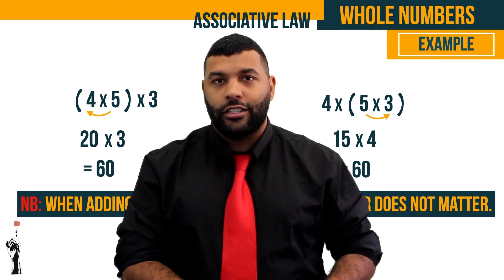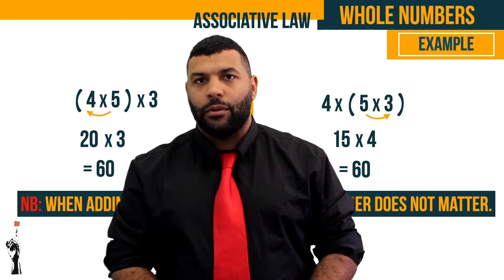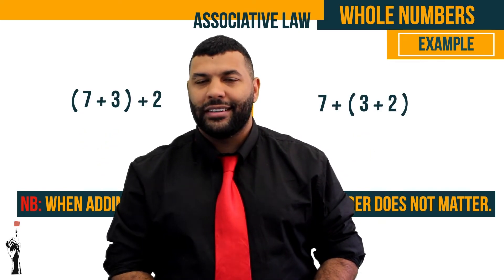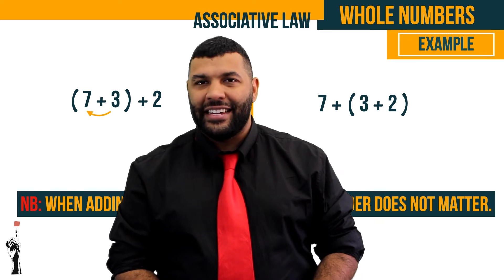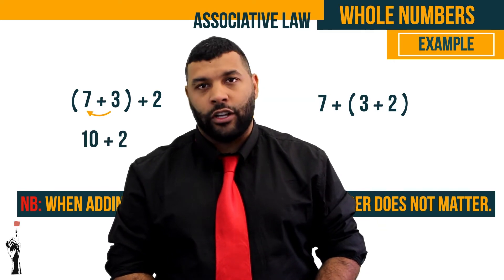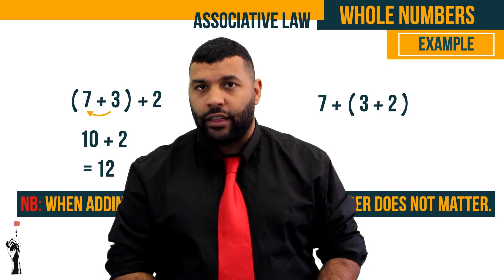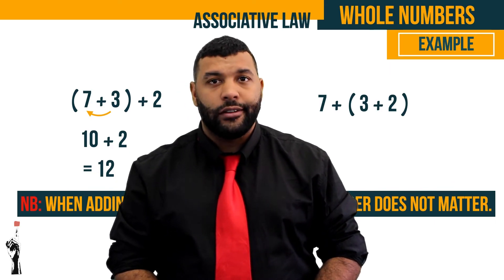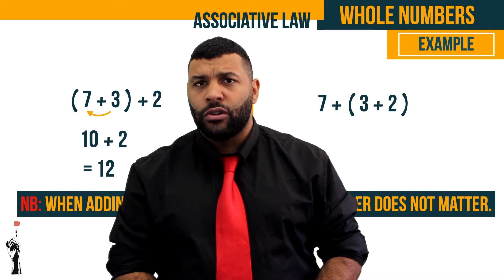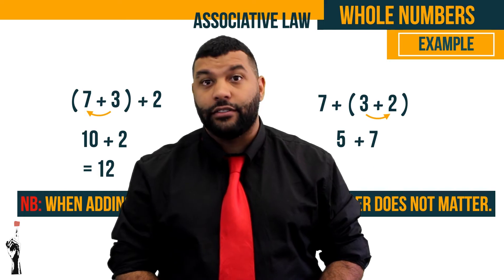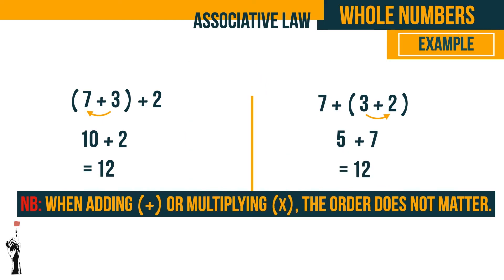Let's take a look at the last example. We have 7 plus 3 grouped together plus 2. 7 plus 3 is 10, plus 2 gives us 12. If we group the 3 and the 2 together instead, we have 7 plus 3 plus 2 — so 3 plus 2 is 5 and 7 plus 5 gives us 12. This is a great example of the associative law applied to addition.